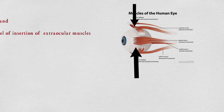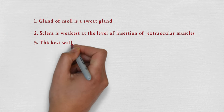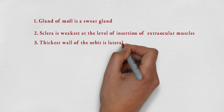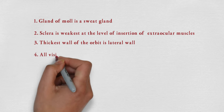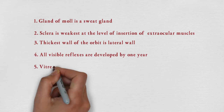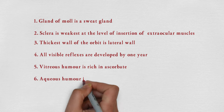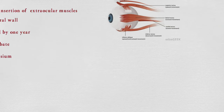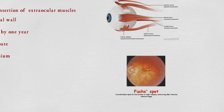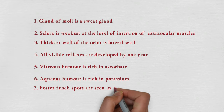Sclera is weakest at the level of insertion of extraocular muscles — at this point it is weakest. Thickest wall of the orbit is the lateral wall. All visible reflexes are developed by one year. Vitreous humor is rich in ascorbate, while aqueous humor is rich in potassium.